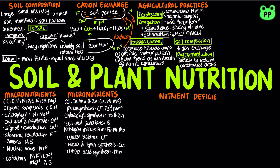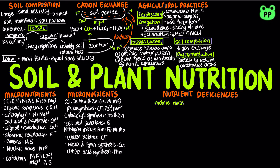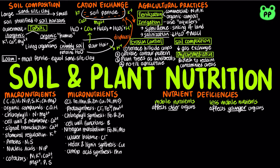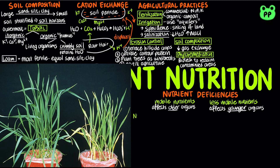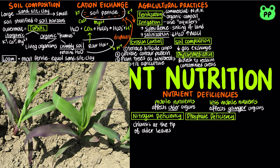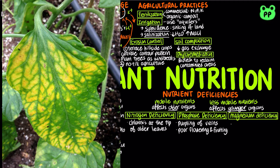Symptoms of mineral deficiency depend on the nutrient's function and mobility within the plant. Deficiency of a mobile nutrient usually affects older organs more than younger ones, whereas deficiency of a less mobile nutrient usually affects younger organs more than older ones. The most common deficiencies are those of nitrogen, potassium, and phosphorus. Nitrogen deficiency leads to chlorosis or yellowing at the tip of older leaves. Phosphate deficiency leads to purpling of veins and poor flowering and fruiting. Magnesium deficiency leads to chlorosis between veins of older leaves.